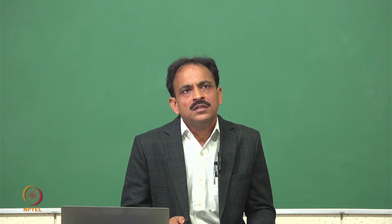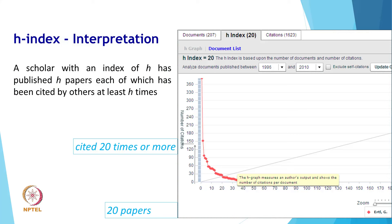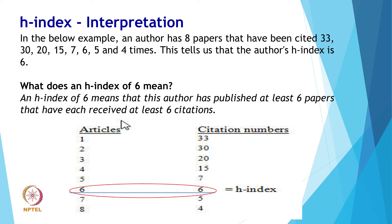You can see in this slide the interpretation of H index — this author has published many papers, but his 20 papers have received at least 20 citations, so his H index is 20. In another example, an author who has published 6 papers with an H index of 6 means those 6 papers each received at least 6 citations. H index can be found from Web of Science, Scopus, and Google Scholar.